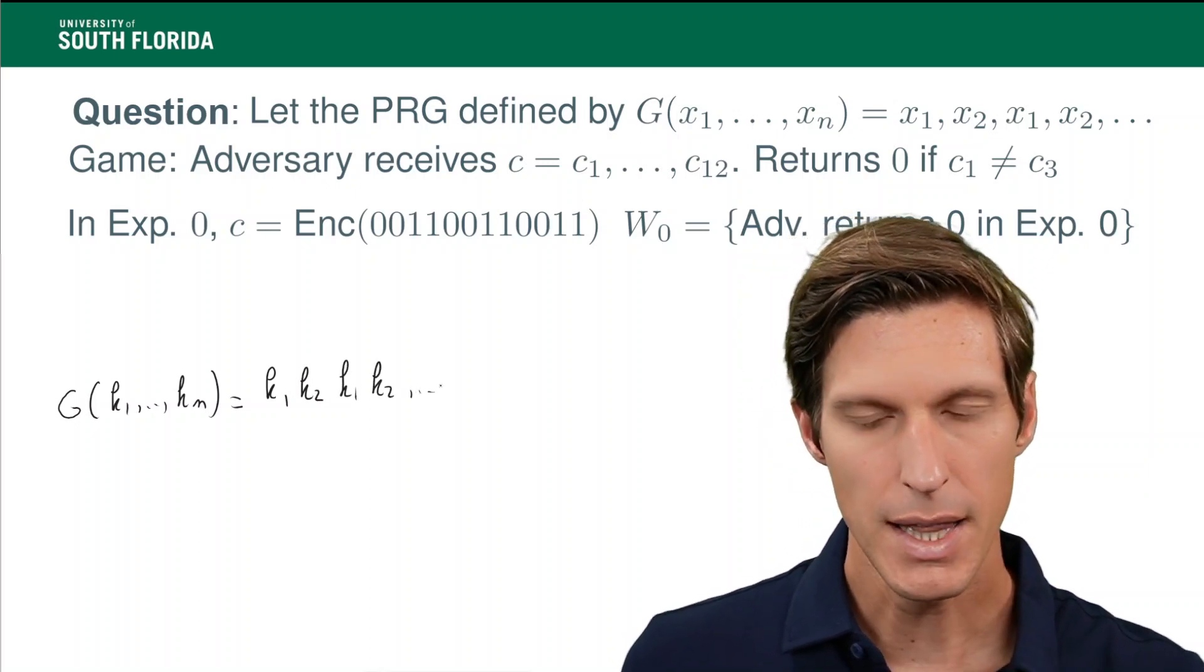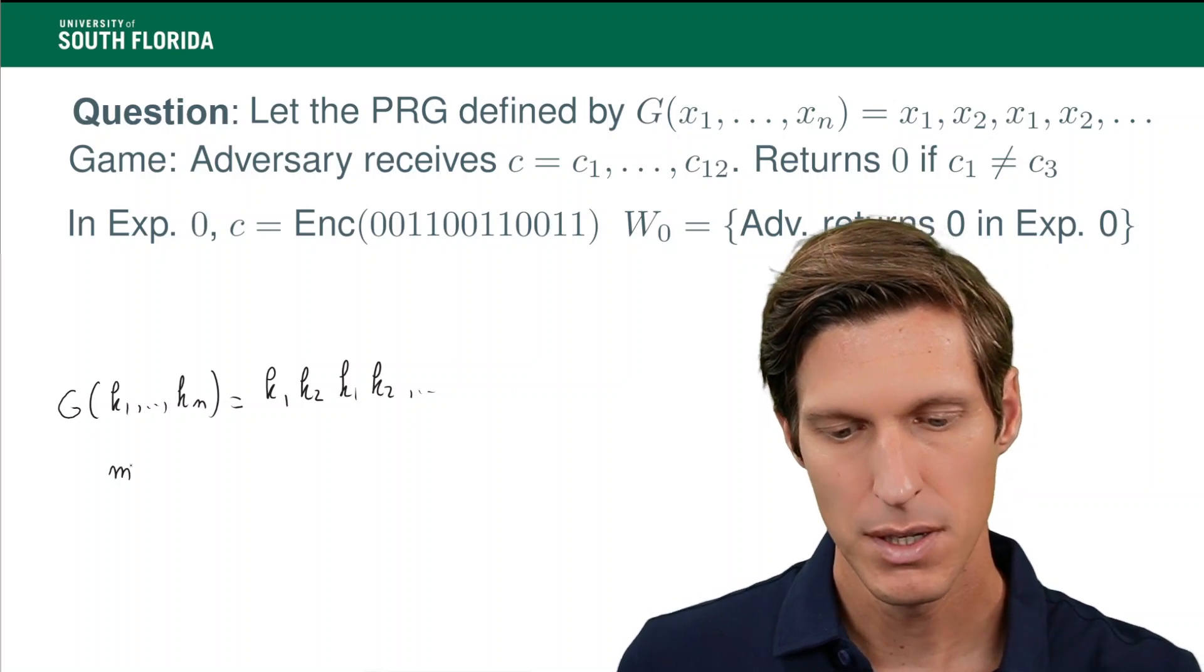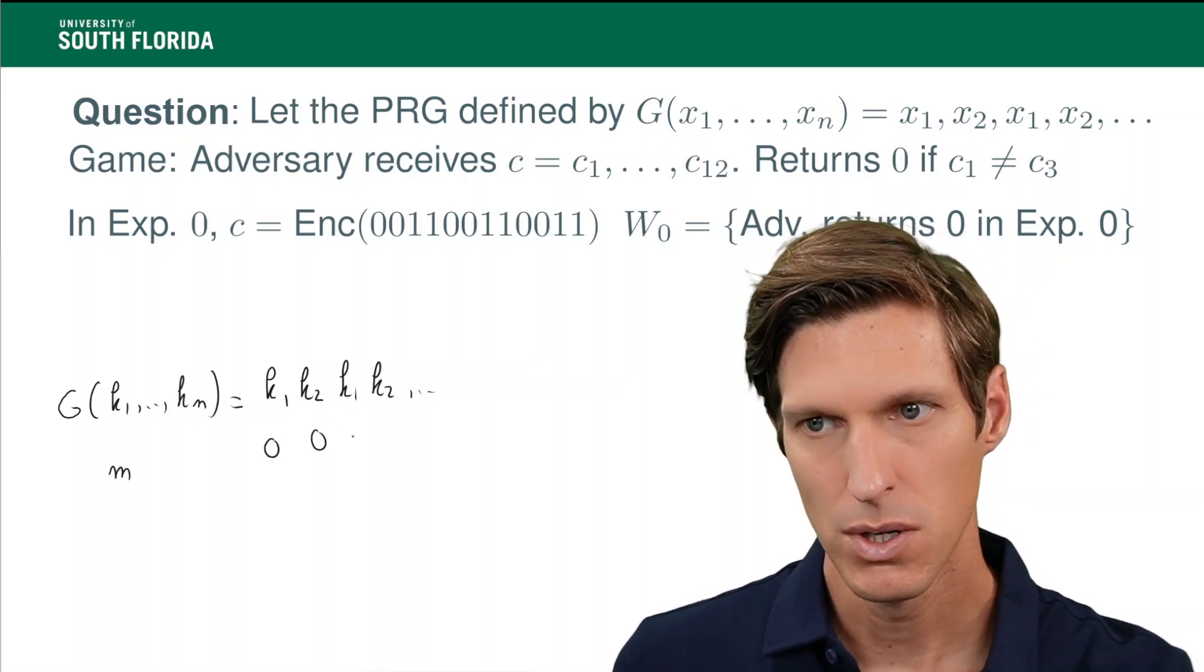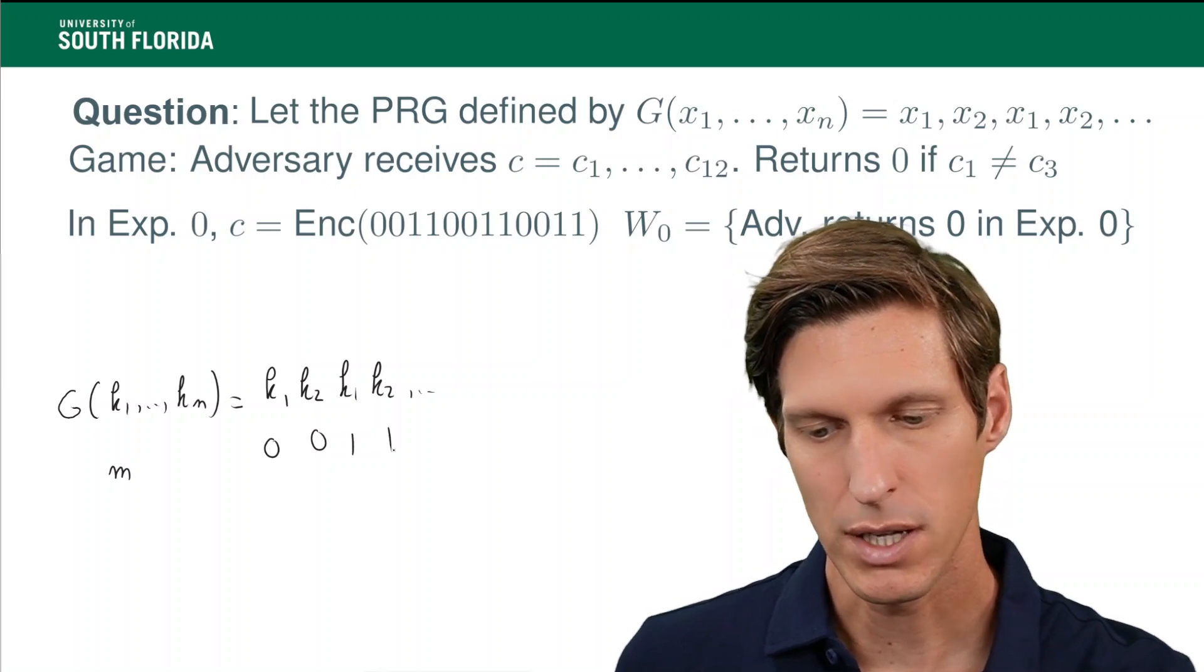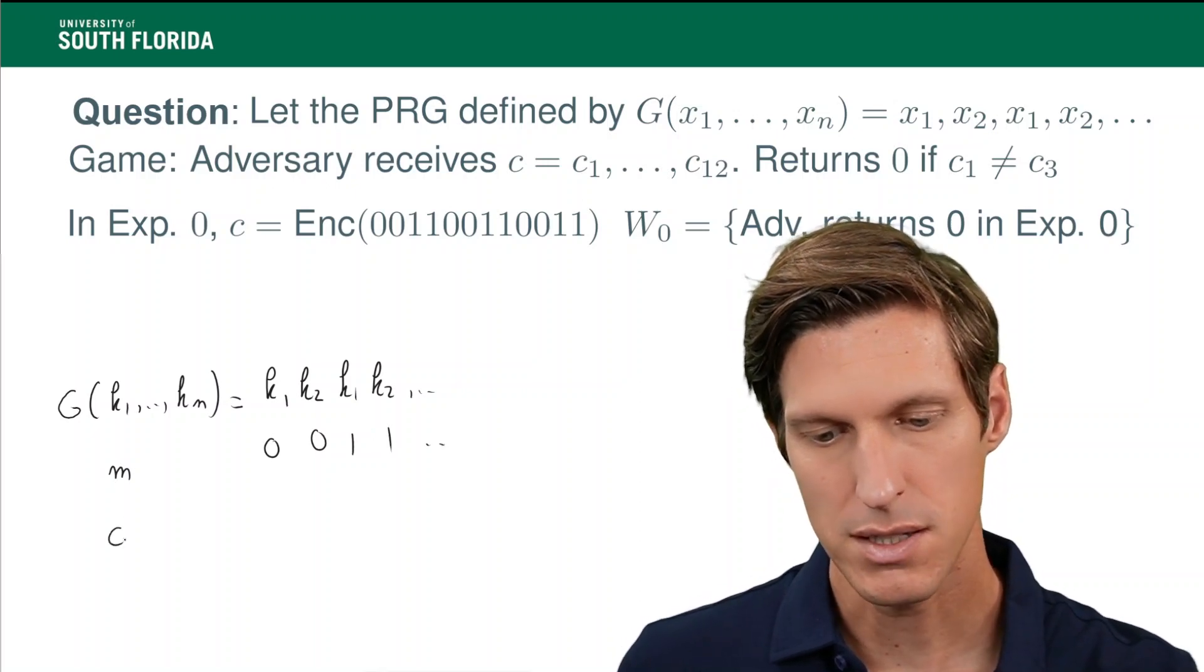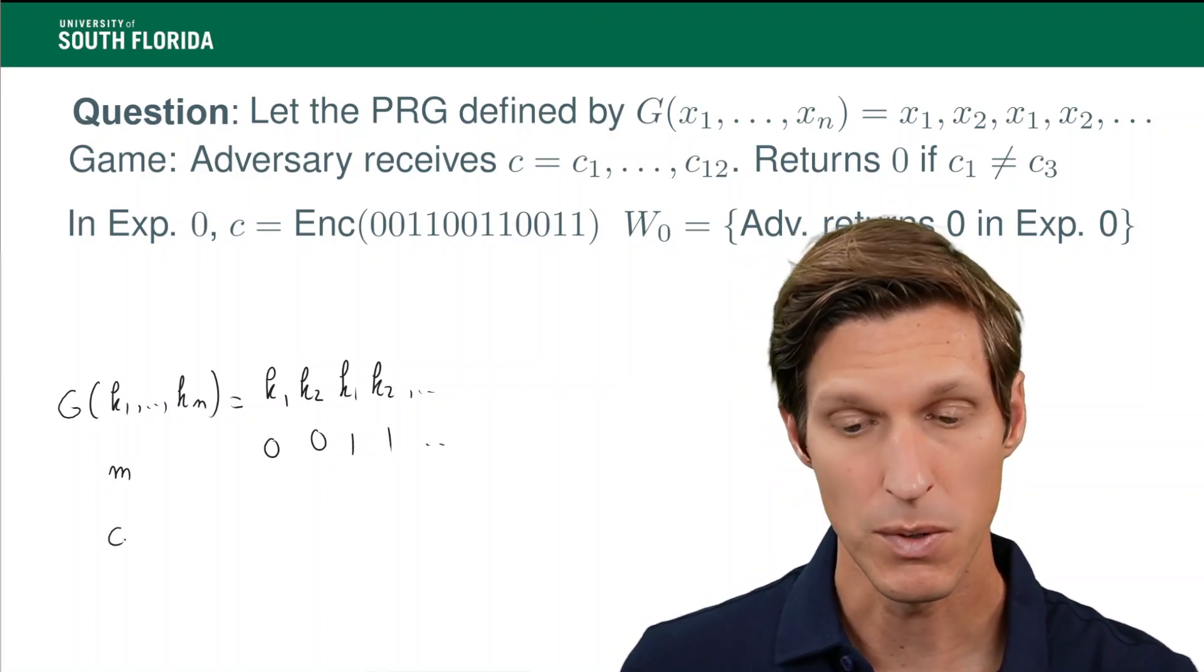And then with that choice of M, we got 0, 0, 1, 1, and so on and so forth. And my ciphertext is the XOR bit by bit of the keystream in the message.